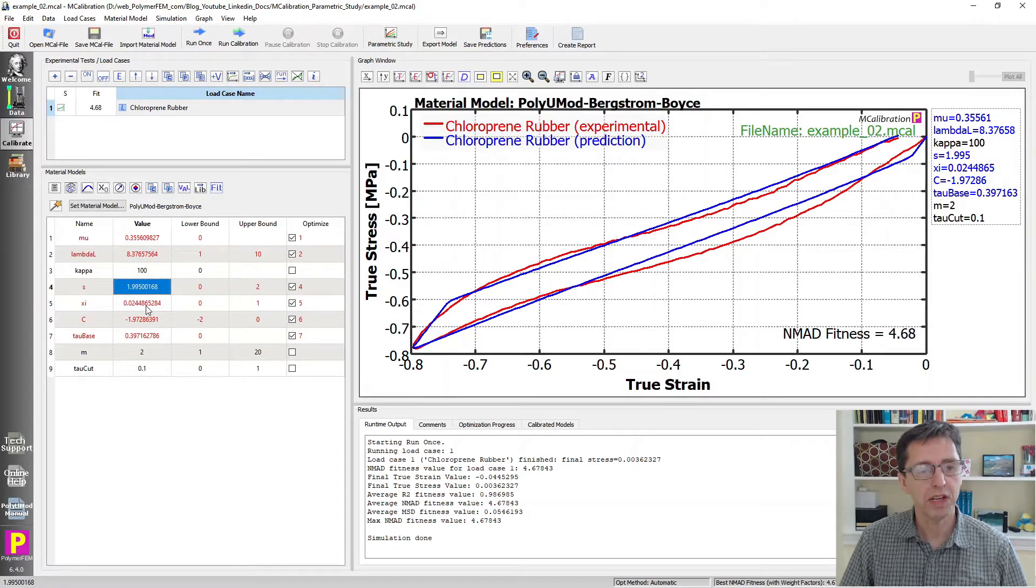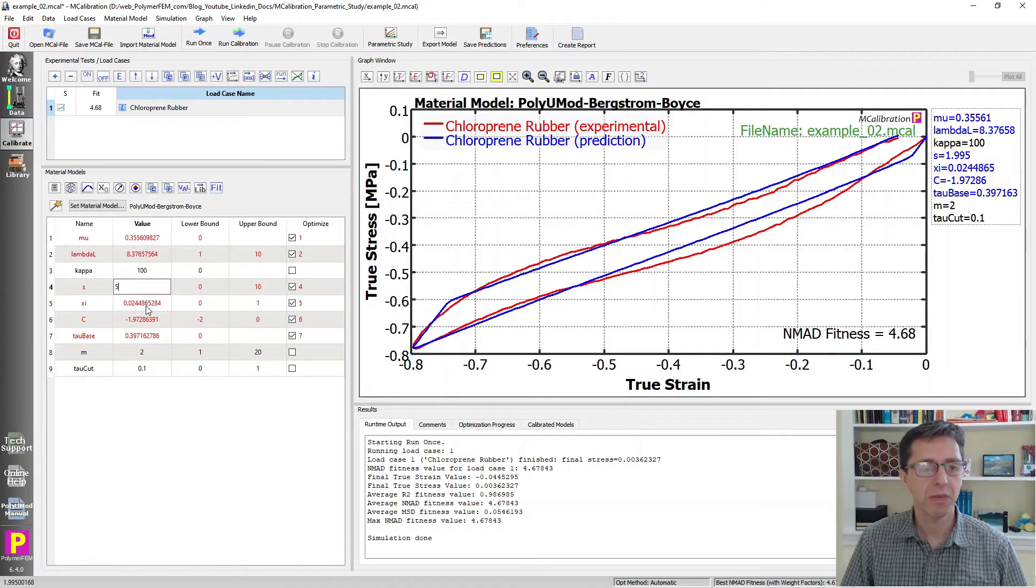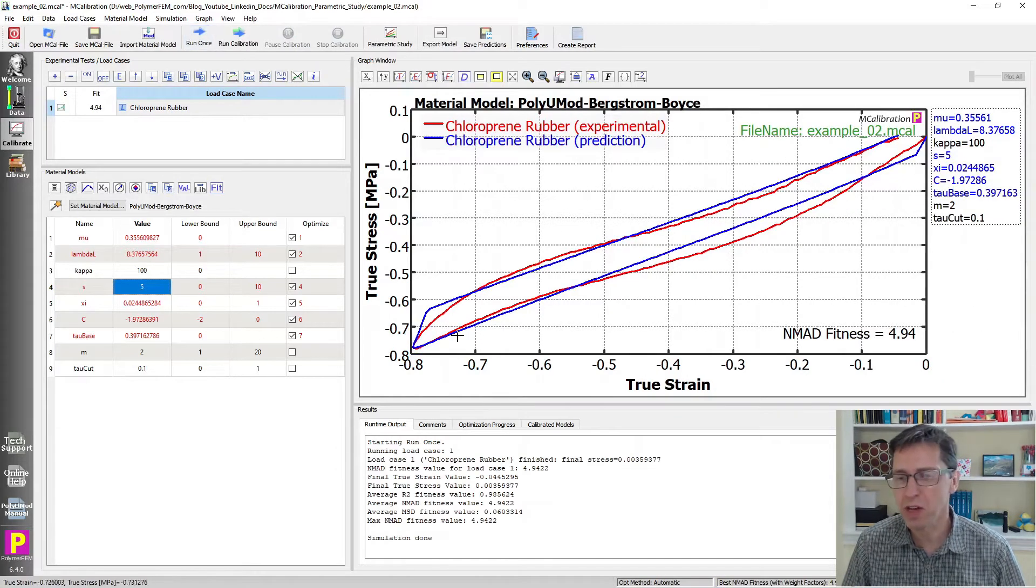So it's 1.99, what if I make it - I'm going to allow it to be bigger, if I make it 5 and I run it again and look at the screen carefully, okay what changed, it's so hard to see what difference that made.